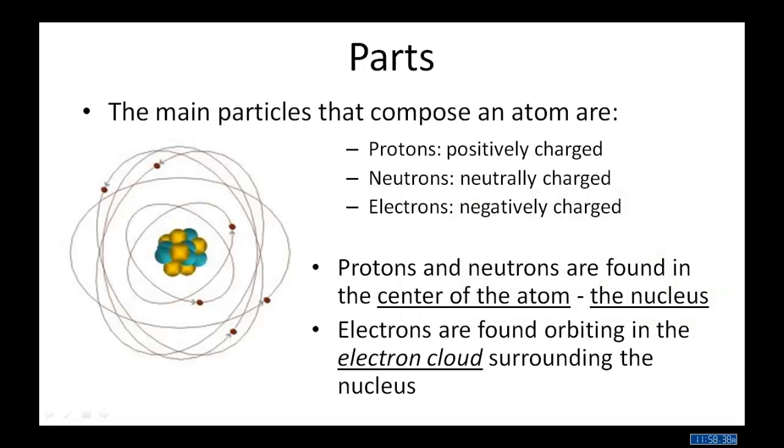The main particles that compose an atom are the protons, the neutrons, which are neutrally charged, and electrons. And, of course, you remember that the protons and neutrons are found in the center of the atom, the nucleus. Where are the electrons found? Orbiting in the electron cloud surrounding the nucleus.